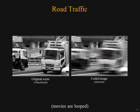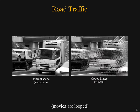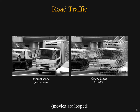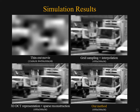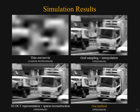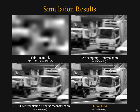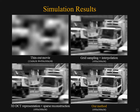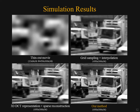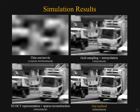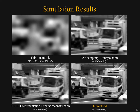Now we show some examples on simulations performed on real high-speed video data. Here is an example of traffic on a road. The movie on the left is the original high-speed movie; the image on the right is the simulated input coded image. Here is a comparison of our method and several other methods — thirty-six frames are recovered from the single input image. Top left is the thin-out movie implemented in many consumer cameras. Top right is the result of pixel-wise sparse sampling and 3D bilinear interpolation of the space-time volume. Bottom left is a sparse reconstruction result using a 3D DCT dictionary. And bottom right is our result, sparse reconstruction using a learned over-complete dictionary.